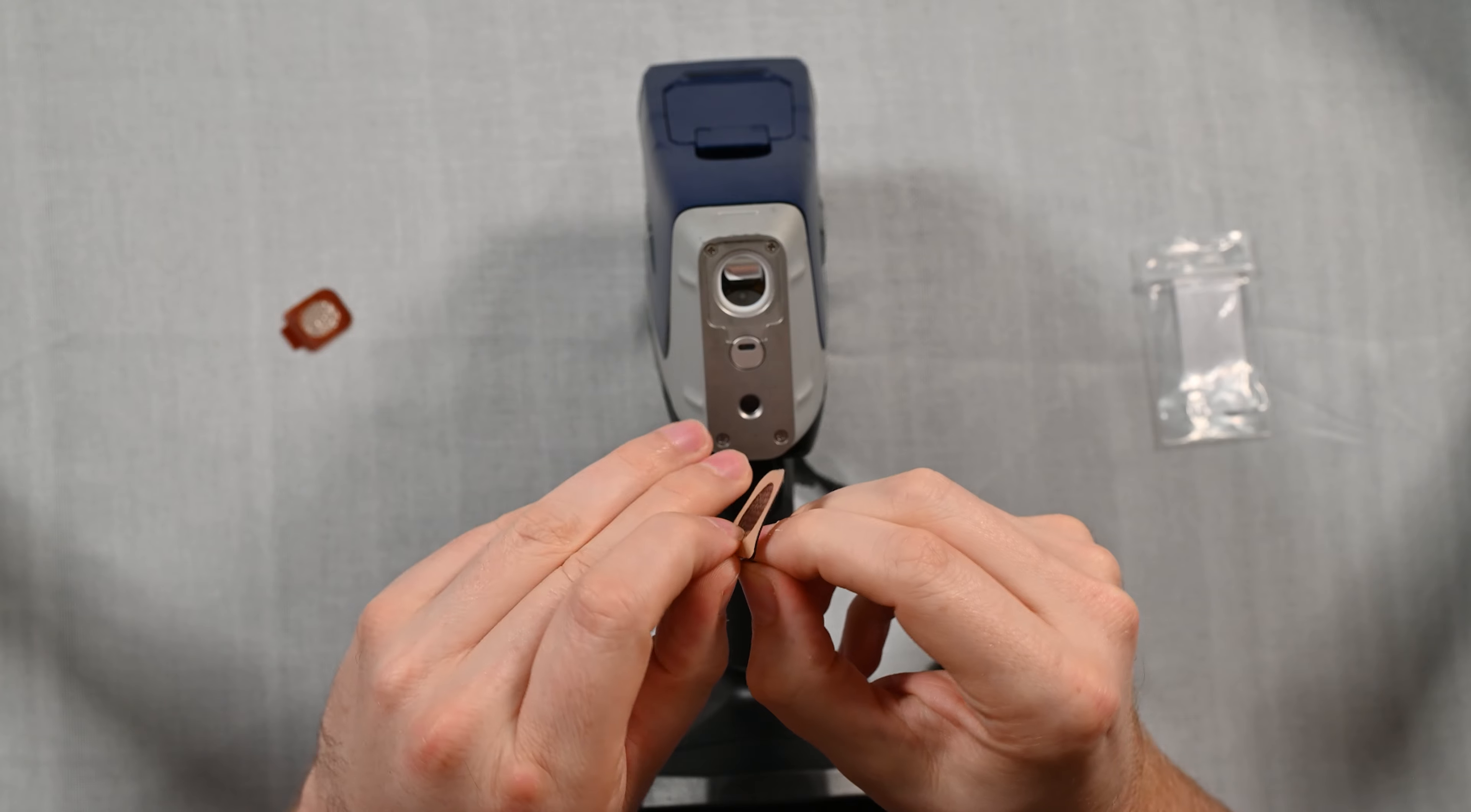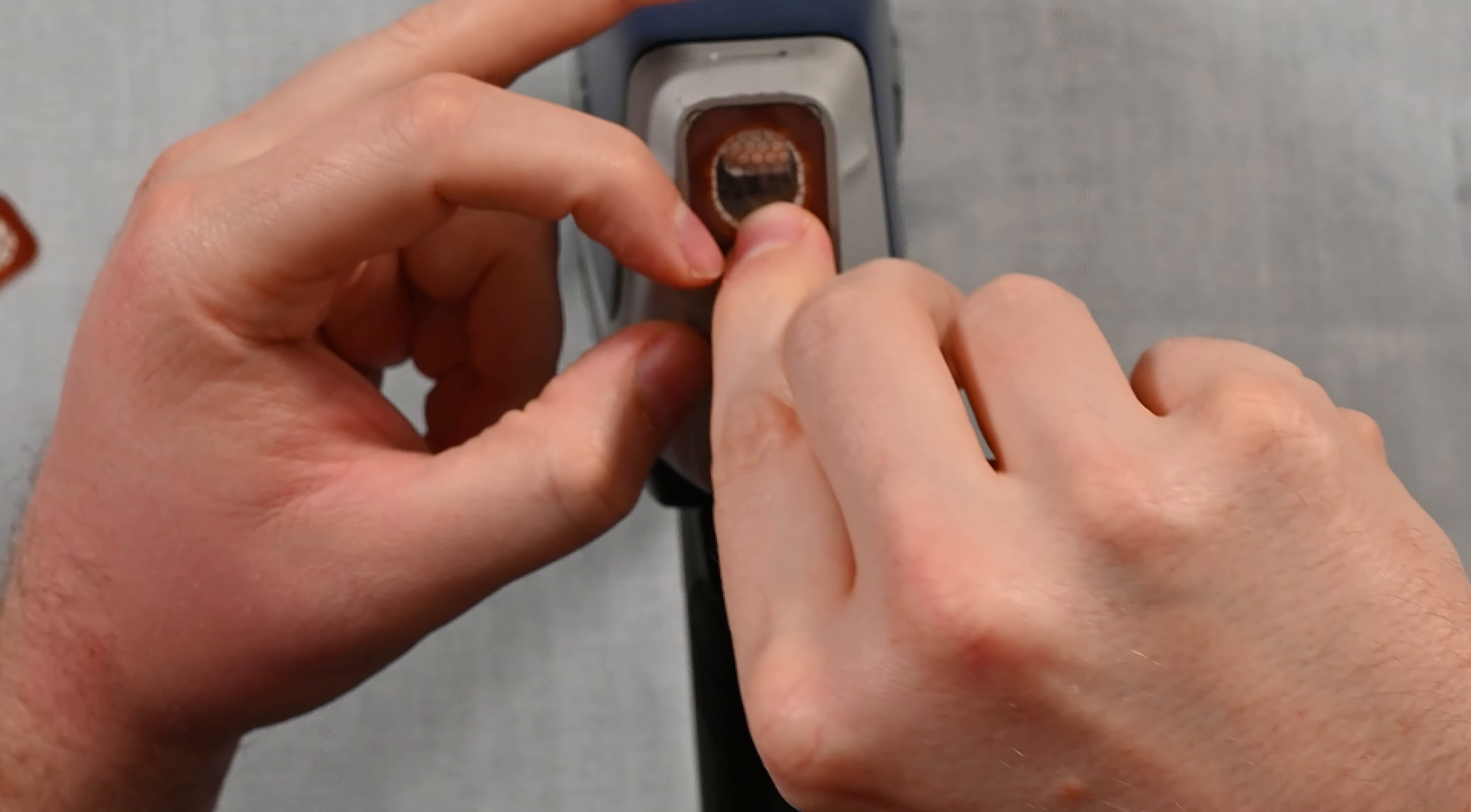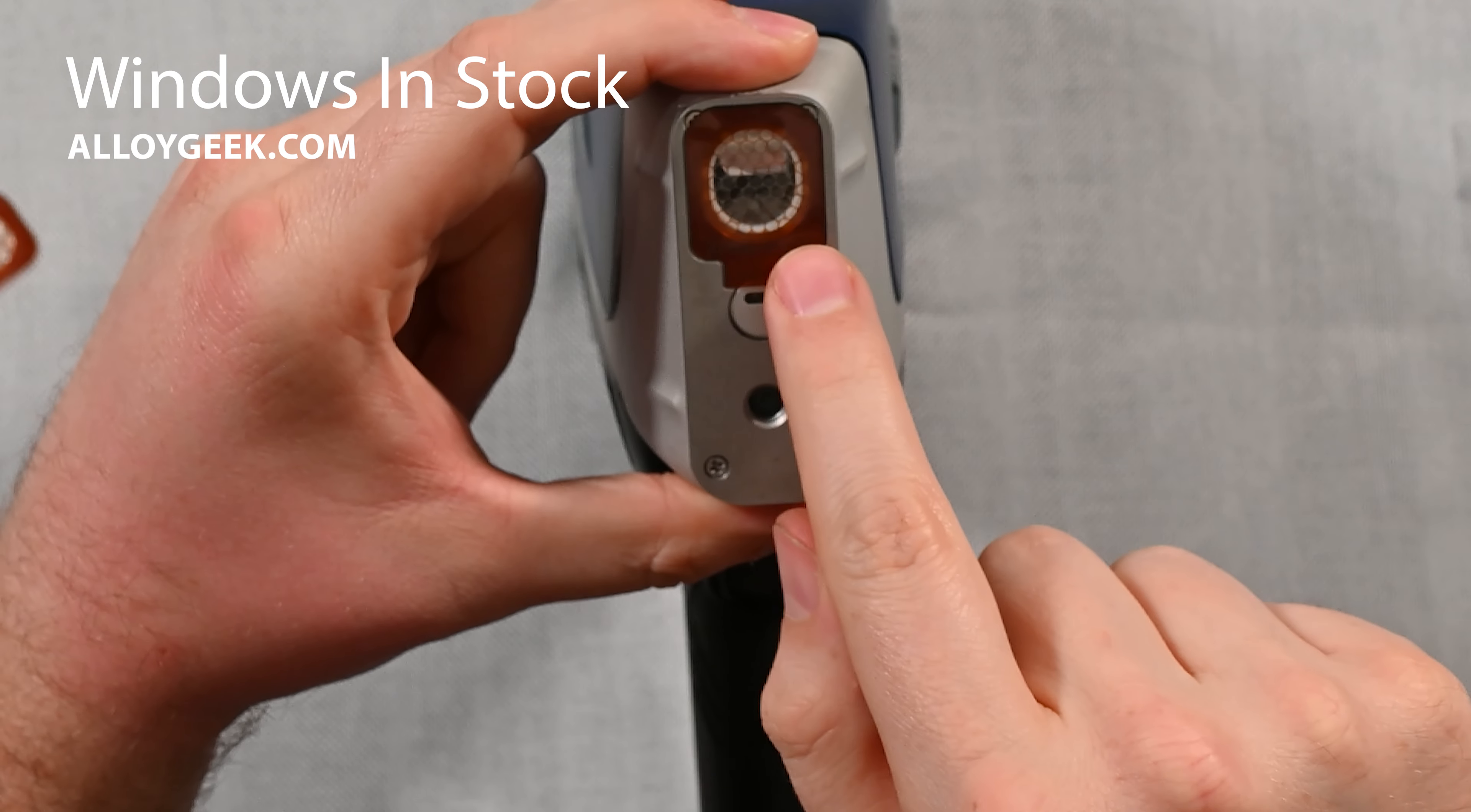On the back there will be this area you can peel away which will reveal the adhesive, and now it's a matter of alignment. It takes a little bit of finesse to get it in the right spot but it's actually pretty easy. There's a beautifully machined groove there that holds the window and it fits perfectly in that space.